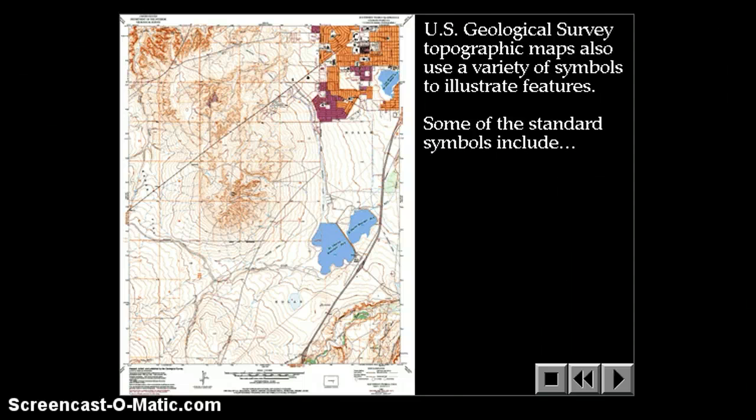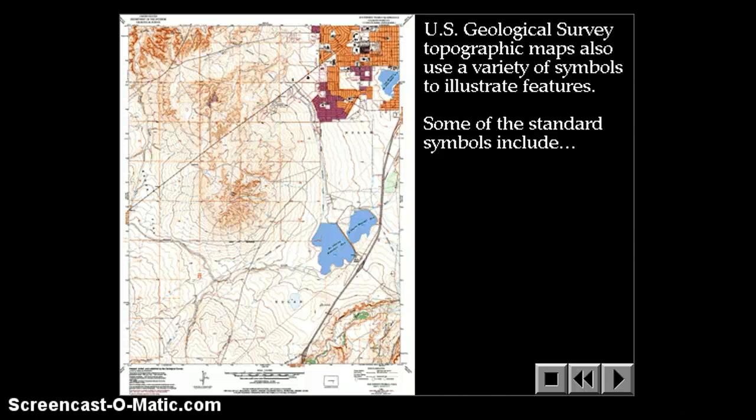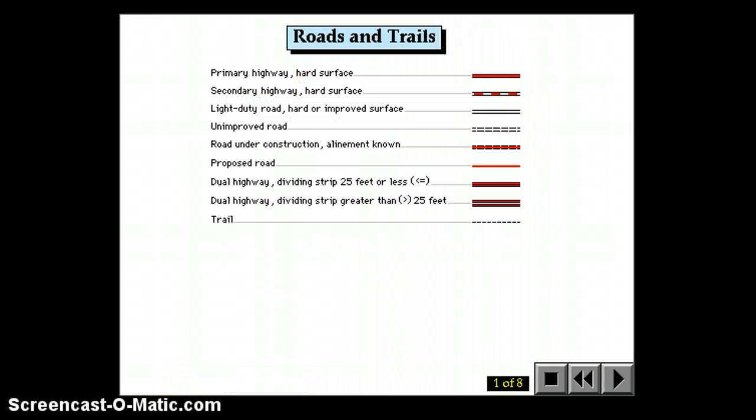The United States Geological Survey topographic maps also use a variety of symbols to illustrate features. Some of the standard features include roads and trails. Roads and trails are either shown in red or black. If they're more solid, they're more developed and primary. If they're dashed lines, it means they're unimproved or under construction.